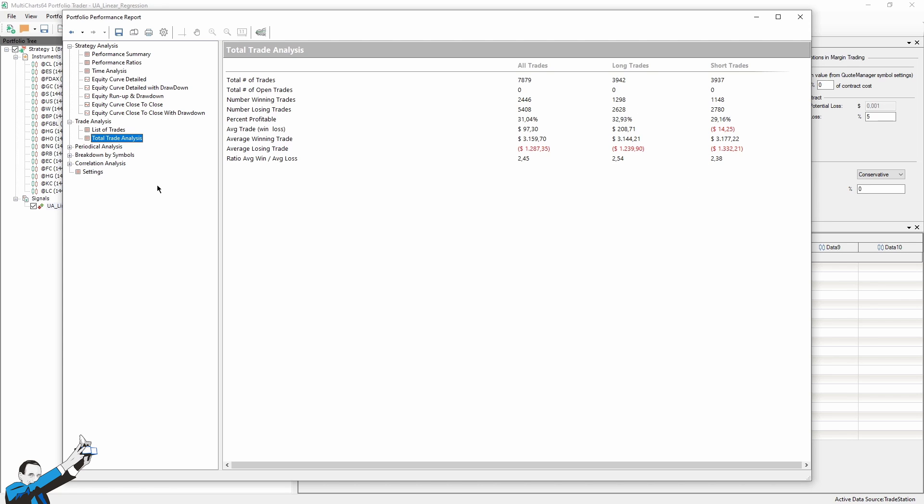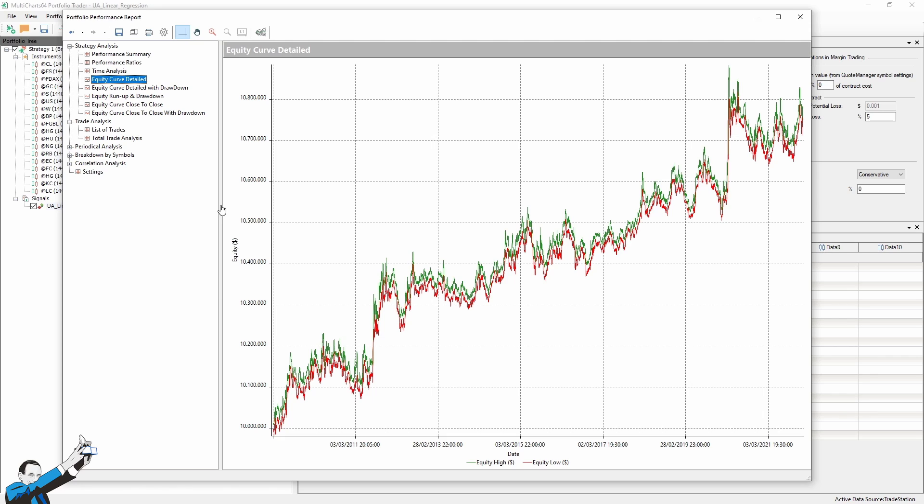Linear regression could be one of the many indicators that we can use to build our strategies. We could also modify it by adding some bands, calculate it as the standard deviation of the linear regression, and enter on a cleaner breakout, as if they were Bollinger Bands. So you see, really, the possibilities are clearly endless. And in our opinion, this is surely a good starting point. So why not give it a try?